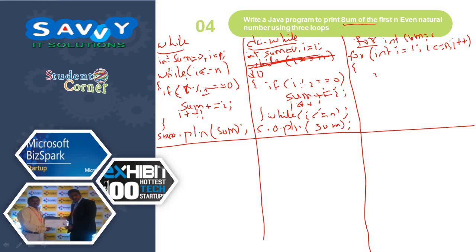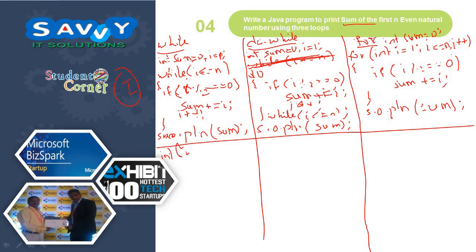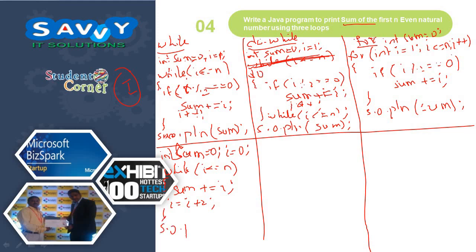For the for loop: initially int sum is equal to 0, i less than or equal to n, i plus plus — if i mod 2 is equal to 0, sum plus equals i. This is mechanism 1. The second approach is: int sum is equal to 0, i is equal to 0, while i less than or equal to n — sum plus equals i, i is equal to i plus 2 — System.out.println sum.